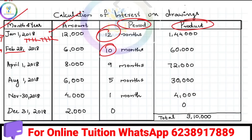Next, for March 31st to December 31st: April, May, June, July, August, September, October, November, December — that gives 9 months. For August 31st to December 31st: September, October, November, December, January — that gives 5 months.